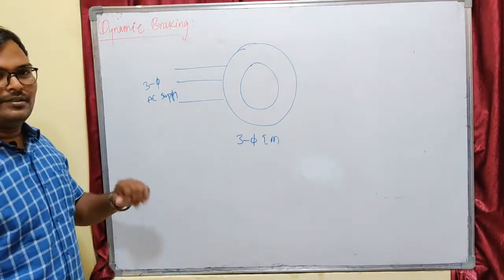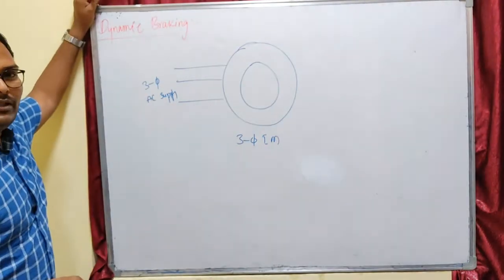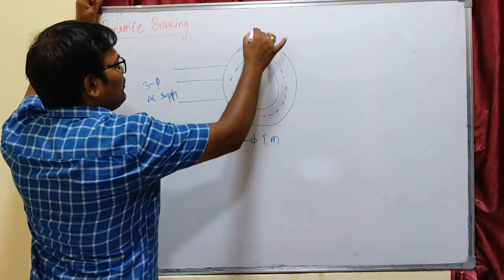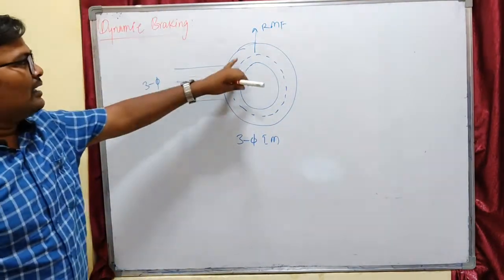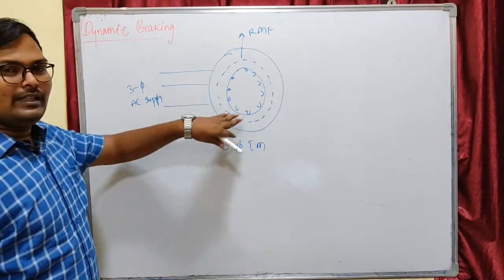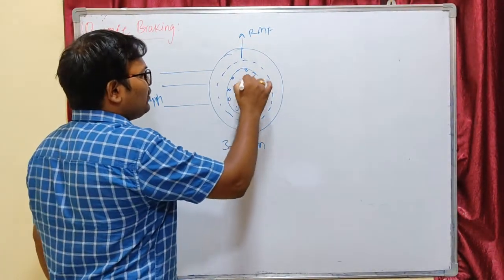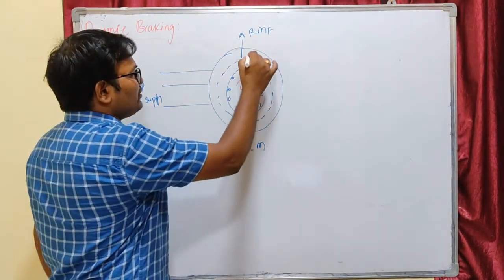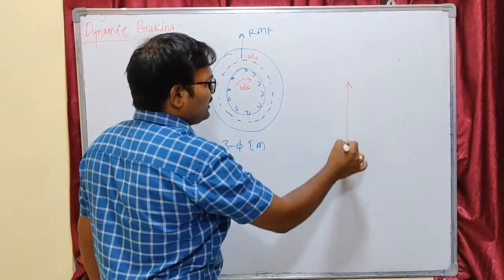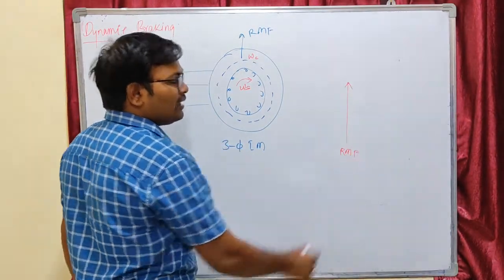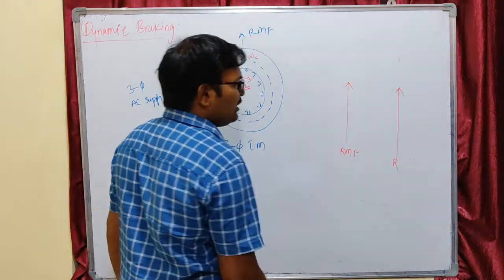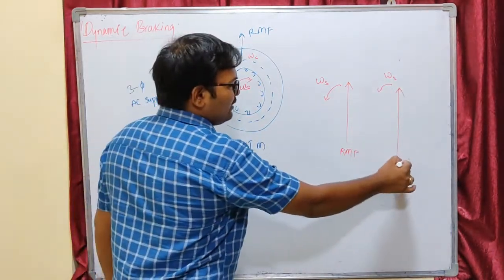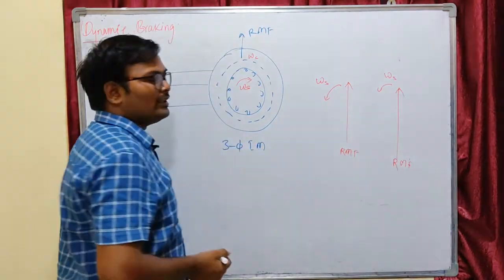Now let us see what dynamic braking is in AC machines. We apply three-phase AC supply to our induction motor stator, which induces a rotating magnetic field in the air gap. This rotating magnetic field cuts with the rotor conductors, inducing a rotor rotating magnetic field. Both the stator and rotor rotating magnetic fields rotate at synchronous speed, and the rotor field tries to catch up with the stator rotating magnetic field.